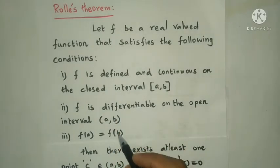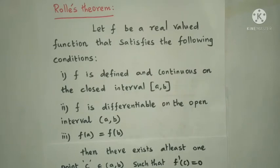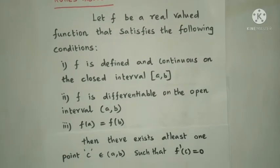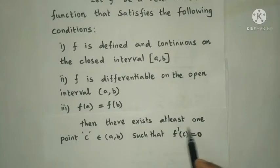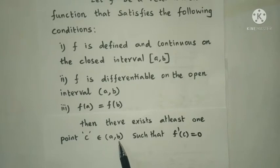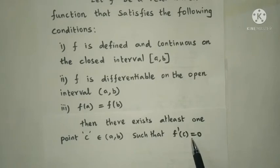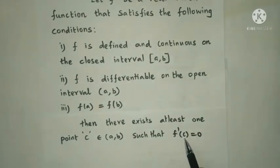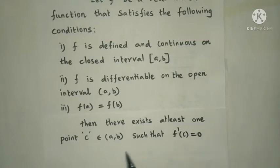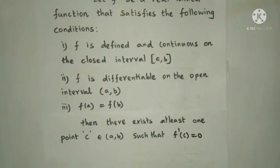When the three conditions are satisfied, Rolle's theorem is applicable. Then there exists at least one point c belonging to the open interval (a, b) such that f'(c) = 0. At least one value of c in the open interval (a, b) is guaranteed. This is Rolle's theorem.